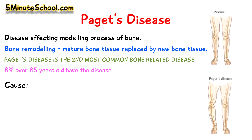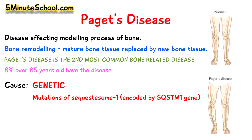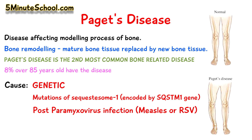The cause of Paget's disease is said to be genetic — that means if someone in your family has had it, it's likely you will too. Mutations of the gene known as sequestrosome 1 gene has been associated with Paget's disease. Other associations of Paget's disease have been said to occur after a paramyxovirus infection like measles or RSV, and they can trigger Paget's disease, however this association is not fully understood at this stage.